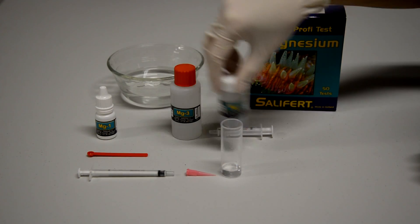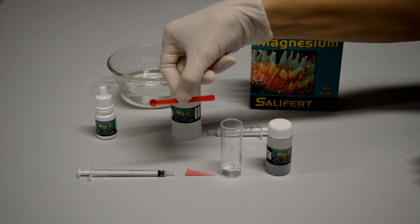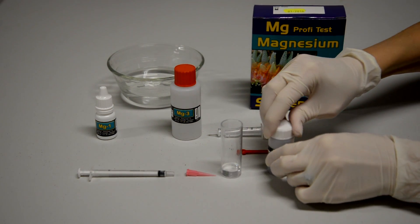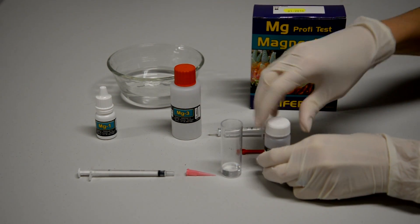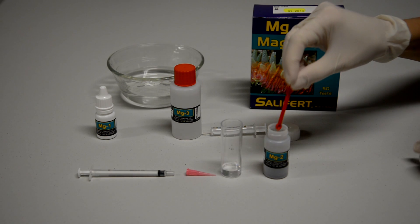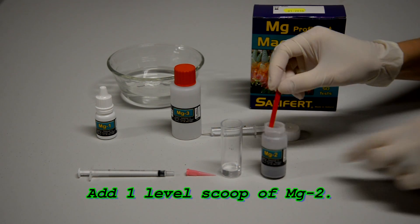Then we go on to magnesium 2. They give you a nice little measuring spoon here that you're going to want to fill just to the top, make it a level spoonful of your magnesium 2 powder.